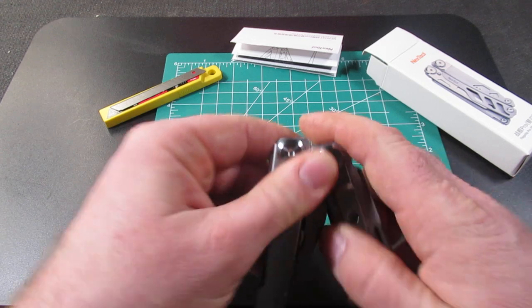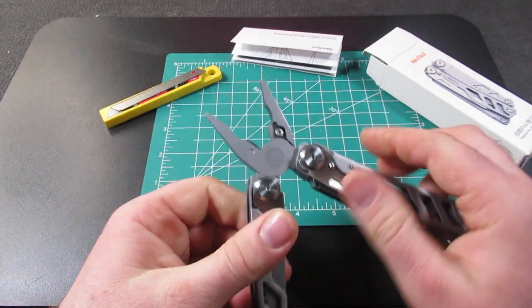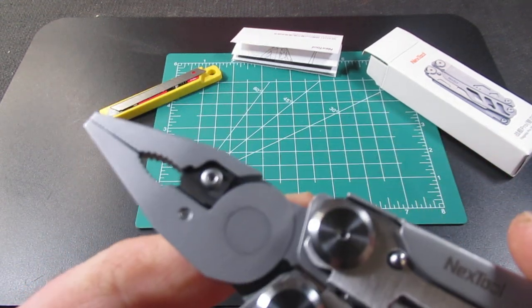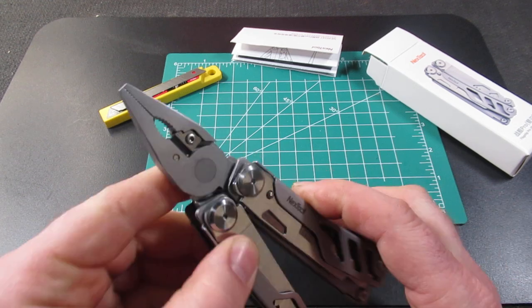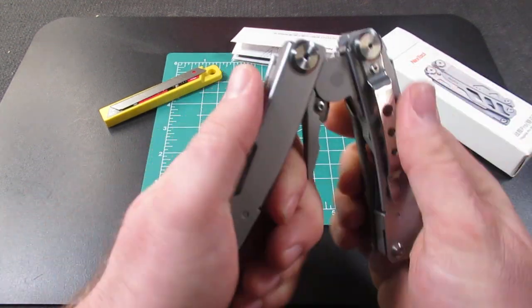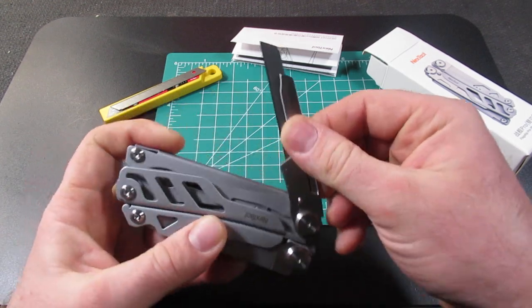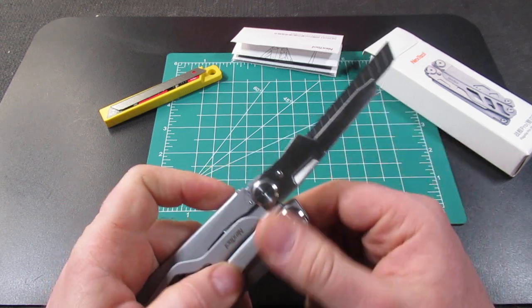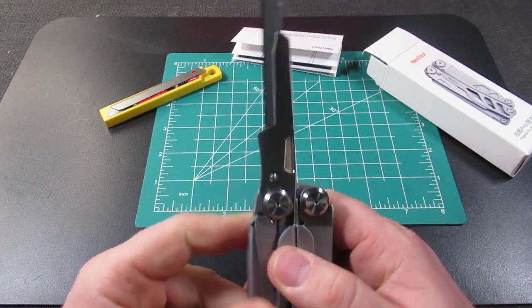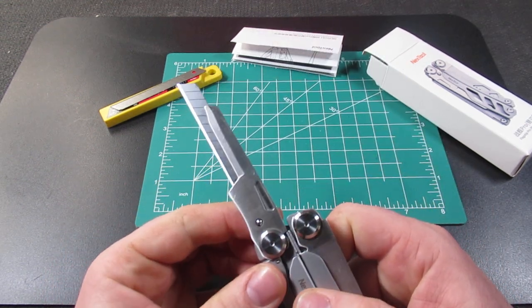And then on the inside, we have a nice set of spring-loaded pliers and they come with replaceable wire cutters. They meet very well at the end. So all this comes in a pretty nice package, but the main reason I bought this actually, and this locks into place as well, was this replaceable knife blade.